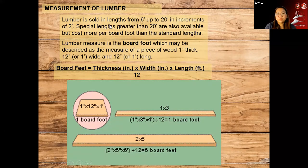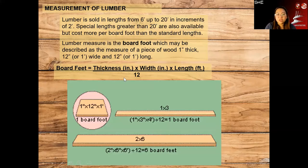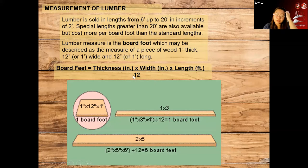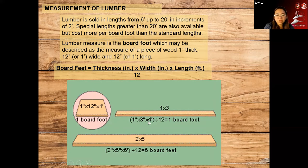Measurement of lumber is usually done in board foot. To compute board feet, multiply the thickness in inches by the width in inches by the length in feet, then divide by 12. For example, 1 inch by 12 inches by 1 foot divided by 12 equals 1 board foot. If your measurement is 2 by 6 by 6 feet, the computation is 2 x 6 x 6 divided by 12 to get the board foot.